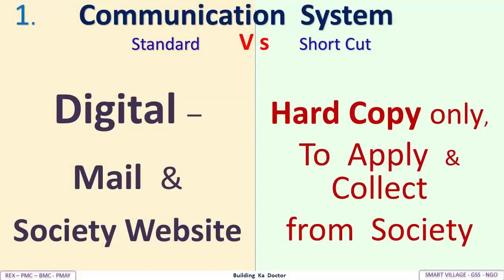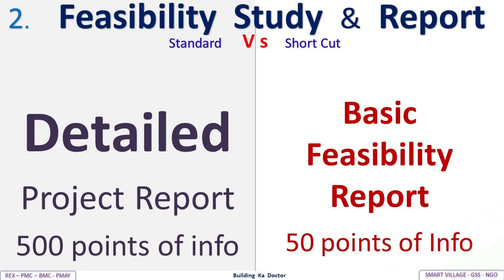First, communication system: Standard uses digital mail and a society website; the shortcut uses hard copy only, collected from the society office. Second, feasibility study and report: Standard provides a detailed project report covering 500 points of information; the shortcut provides a basic feasibility report with only 50 points of information.